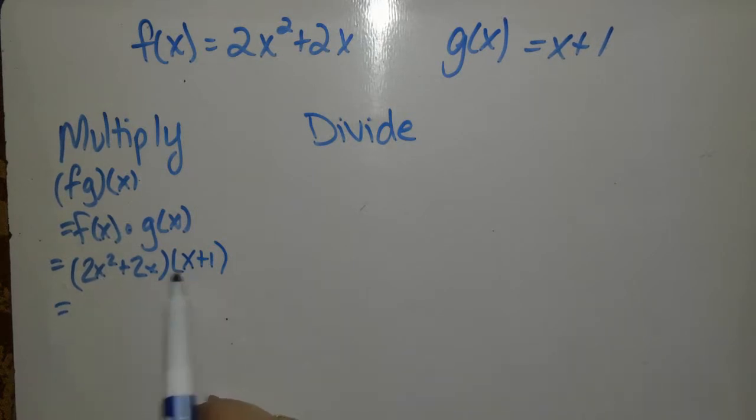2x squared times x is 2x cubed. 2x squared times 1 is 2x squared. 2x times x is another 2x squared. 2x times 1 is 2x.